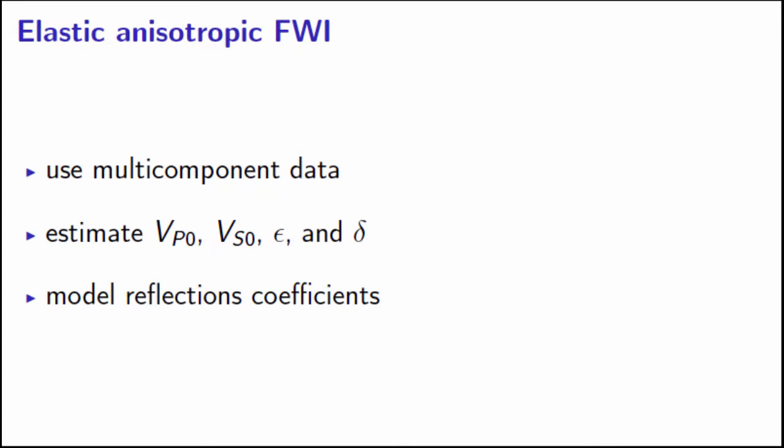So we use multi-component data. And we model energy that's polarized in a 2D plane, which means we've got four model parameters that can sufficiently describe energy polarized in a 2D plane. So we invert for Thomson parameters. And we have the potential, since we use the elastic modeling code, to model the reflection coefficients, which might provide us some information when we do the inversion.